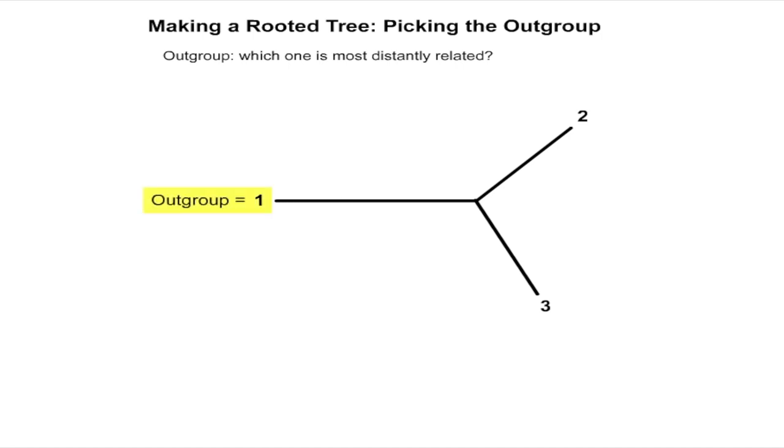An outgroup is a taxon that, while related to the taxa in the study, has been evolving independent of these other taxa for the longest time. In other words, an outgroup is more distantly related to the other taxa on the tree than these in-group taxa are related to each other, and has clearly branched off earlier than the in-group taxa.